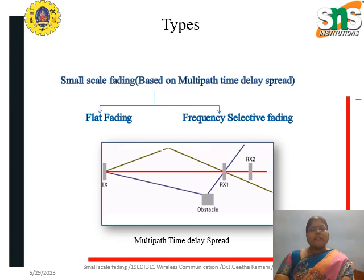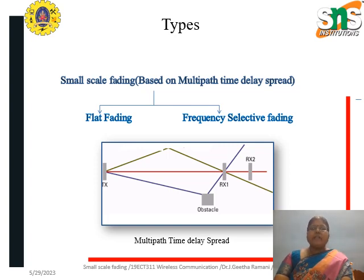There are several classifications in small scale fading. The first classification is based on the multipath time delay spread. Based on this, it could be classified as flat fading and frequency selective fading.